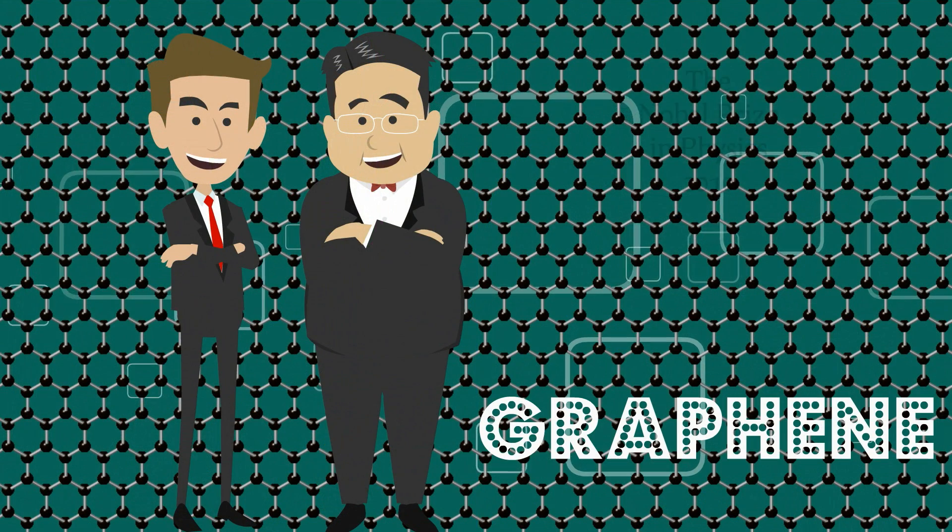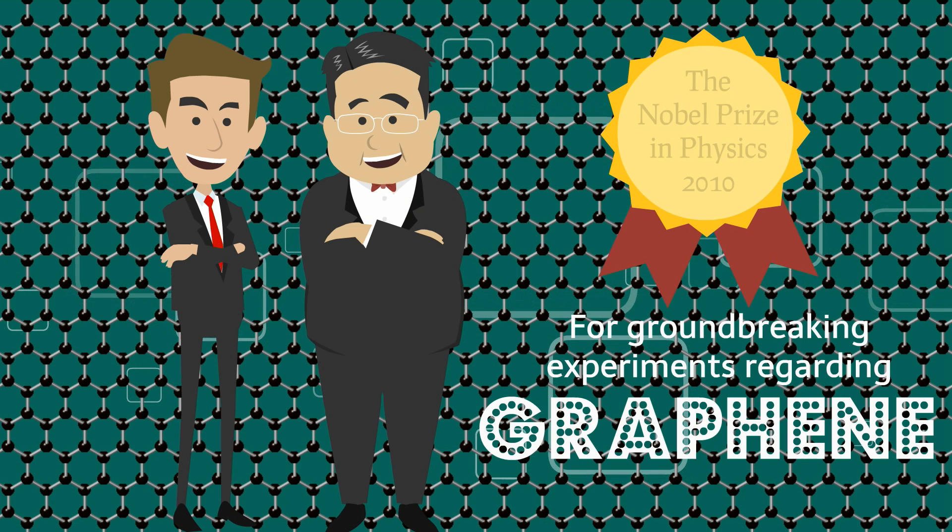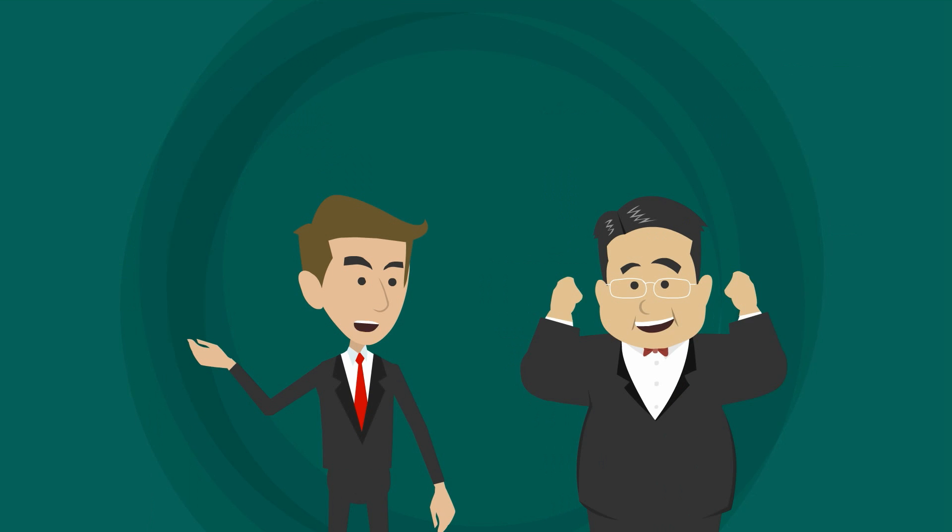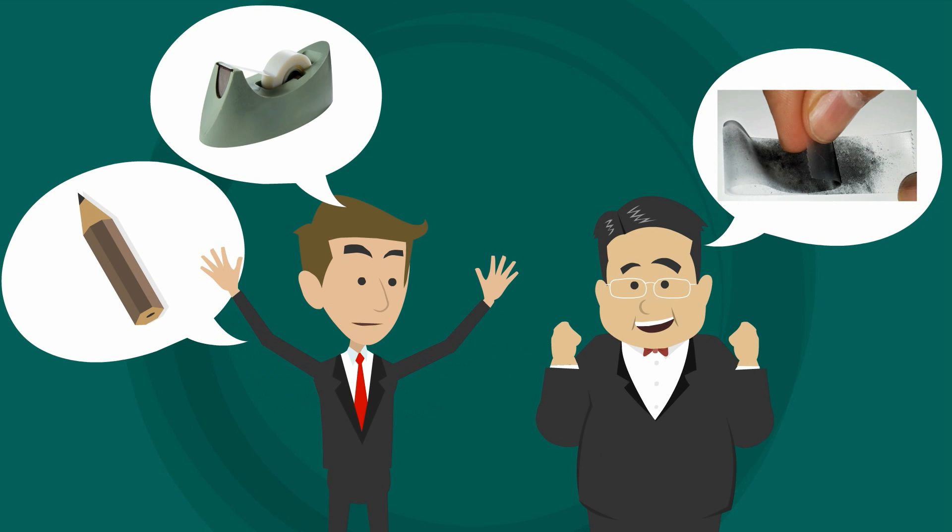Graphene is the first 2D material discovered by two scientists at University of Manchester through isolating just one atomic layer of graphite using scotch tape.